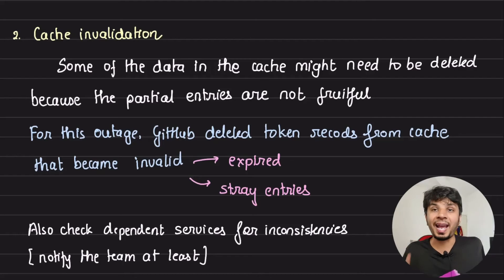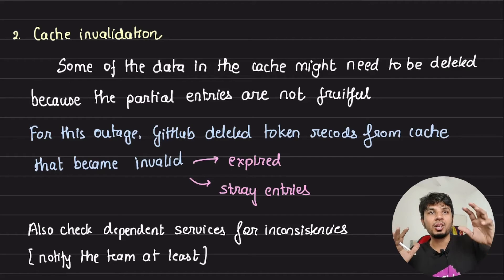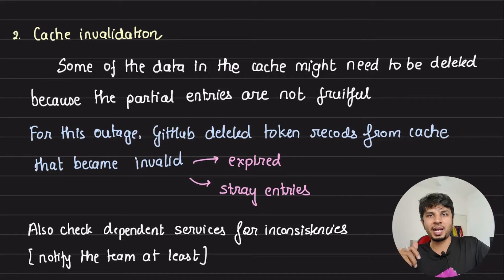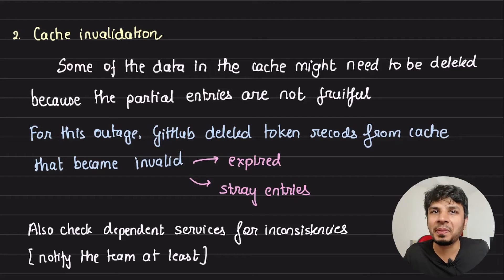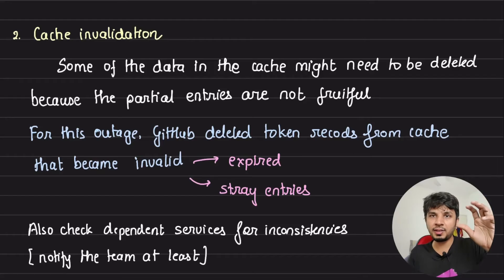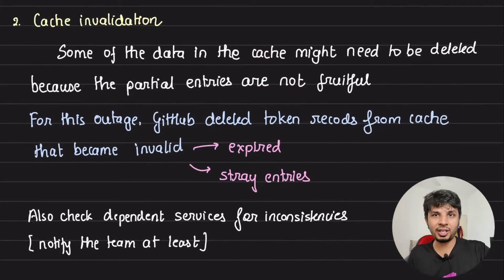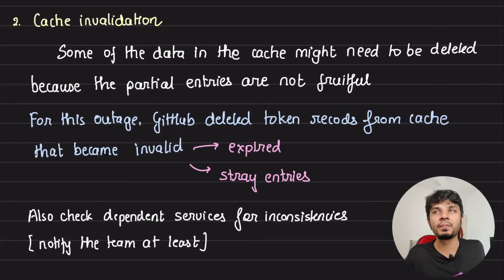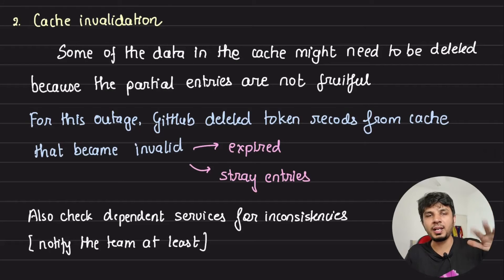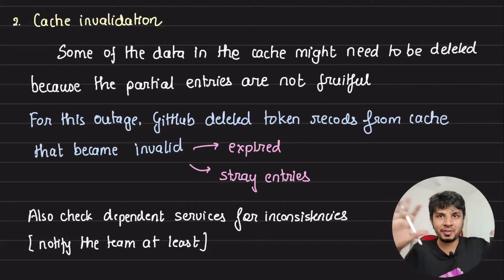The second point, very relevant to this outage, is cache invalidation. Some data in the cache may need to be deleted because partial entries are no longer valid. What can happen is: you wrote to a cache, then had to remove it, but during the outage the entry remains in the cache when it shouldn't. This is a very common use case where your cache has stray entries. It's important to understand how you're utilizing your cache and do cache invalidation if required — you should not be serving stale data to users. After an outage, check if critical cache reads need to be invalidated, and notify dependent services that something like this happened.